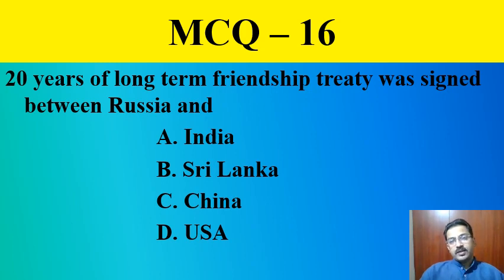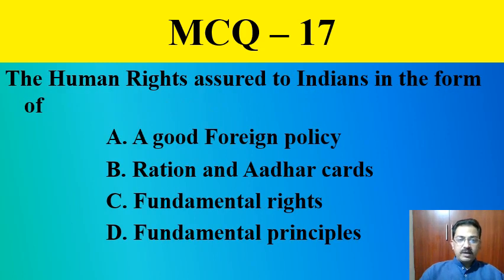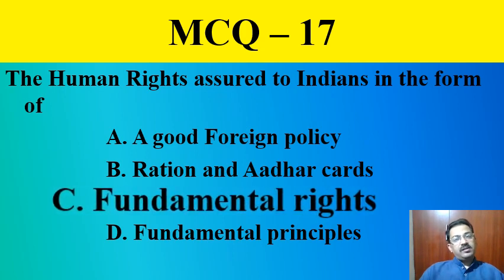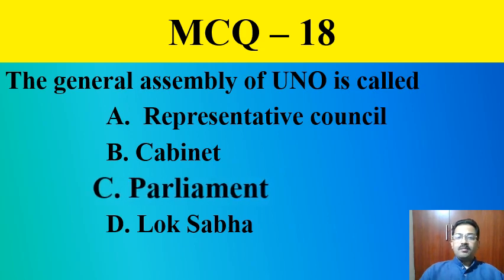MCQ question number sixteen: The 20-year long-term friendship treaty was signed between Russia and — India, India-Sri Lanka, China, or USA. The correct answer is India. MCQ question number seventeen: The human rights assured to Indians are in the form of — a good foreign policy, ration and other cards, fundamental rights, or fundamental principles. The correct answer is fundamental rights. MCQ question number eighteen: The General Assembly is called — representative council, cabinet, parliament, or local body. The correct answer is parliament.